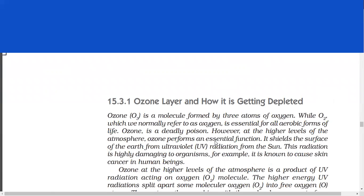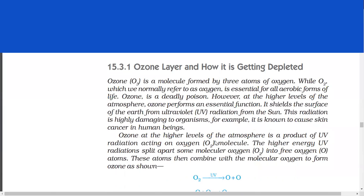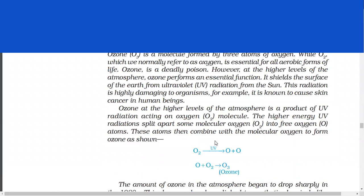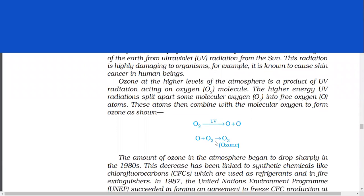Ozone layer and how it is getting depleted. Ozone is a molecule formed by three atoms of oxygen, while O2, which we normally refer to as oxygen, is essential for all aerobic forms of life. Ozone is a deadly poison. However, at the higher levels of the atmosphere, ozone performs an essential function. It shields the surface of the earth from ultraviolet radiations from the sun. This radiation is highly damaging to organisms. For example, it is known to cause skin cancer in human beings. Ozone at the higher levels of the atmosphere is a product of UV radiation acting on oxygen molecules. The higher energy UV radiations split apart some molecular oxygen into free oxygen atoms. These atoms then combine with the molecular oxygen to form ozone.